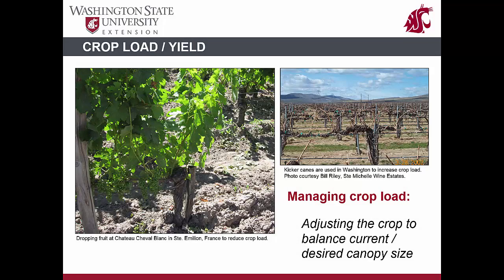Yield adjustment in viticulture is a common technique in areas where there is very little control over other aspects of vine growth, predominantly water. In this situation, a lot of fruit is left on the vine to intentionally control canopy growth. Once the canopy slows growth due to limited amounts of water, or in some cases due to lack of heat during a cool season, the excess fruit is removed. Typically, when controlling source-sink relationships, fruit needs to be removed before veraison.